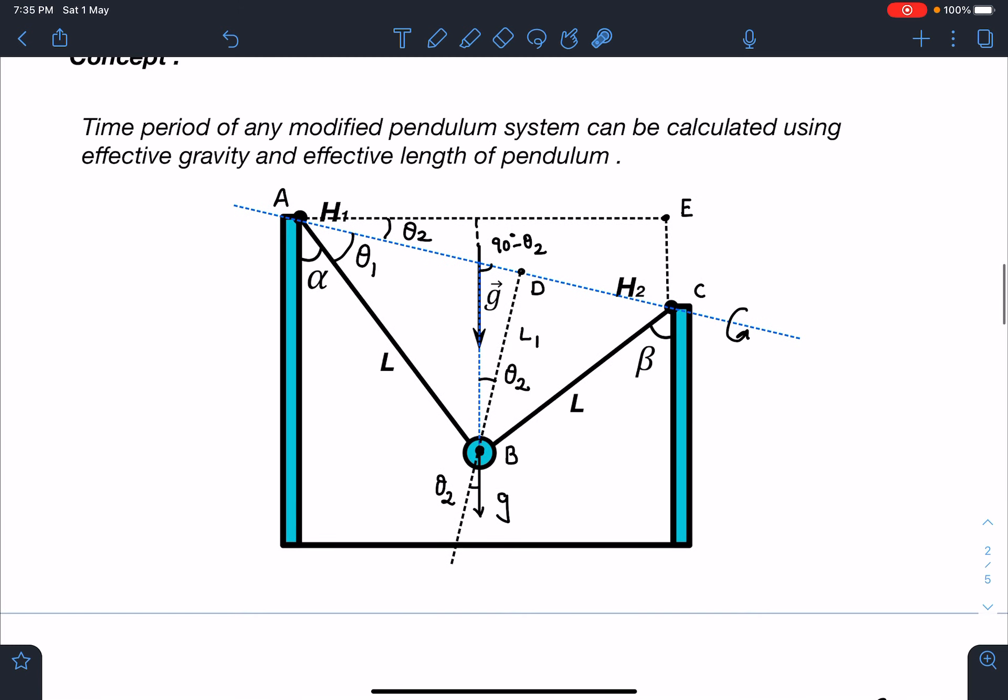So tan theta2 if you see in this triangle, it is EC divided by this distance. This is the tan theta value EC divided by AE. So it is very simple. Here you can see this length is nothing but L cos alpha minus here you can see L cos beta. So this will become L cos alpha minus L cos beta.